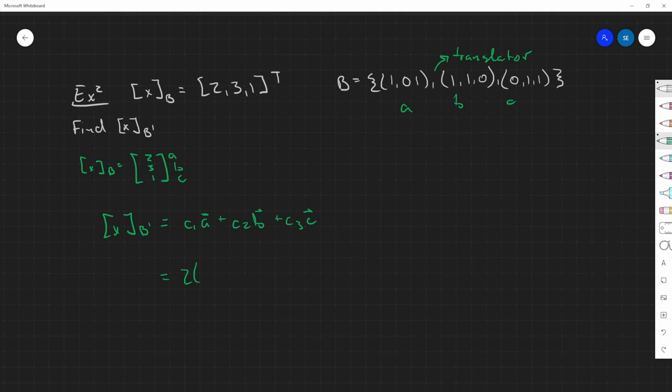So it's going to simply be 2 times 1,0,1, plus 3 times 1,1,0, and then lastly it will be 1 times 0,1,1.